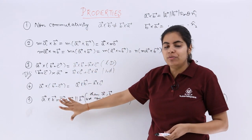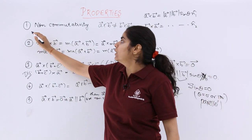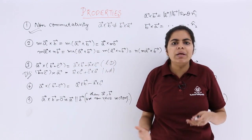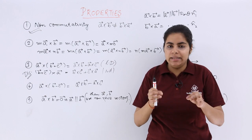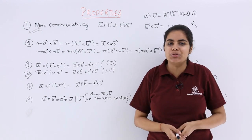But yes, these properties are of wide importance, specially you have to take care that scalar product is commutative but vector product is not. Rest other properties remain more or less the same. But yes, the placement of sine here and cosine there makes a huge difference.